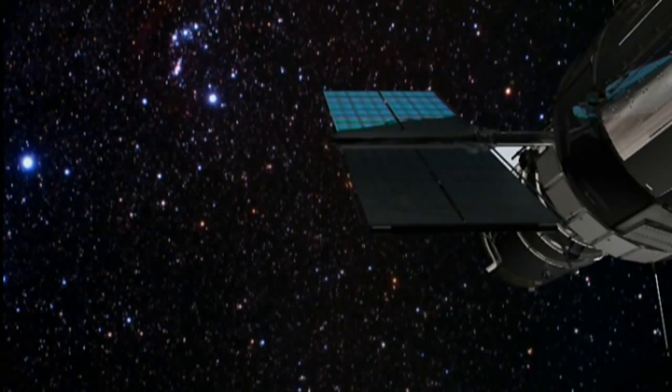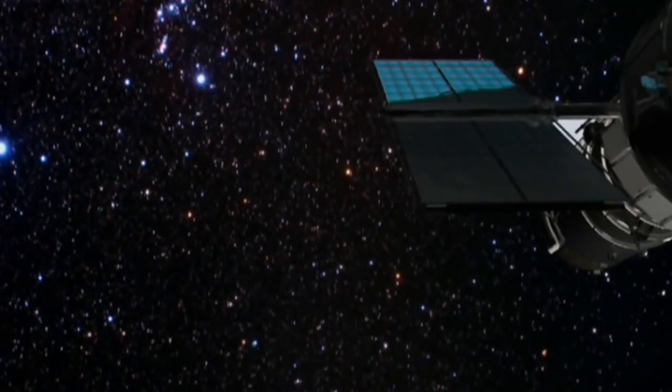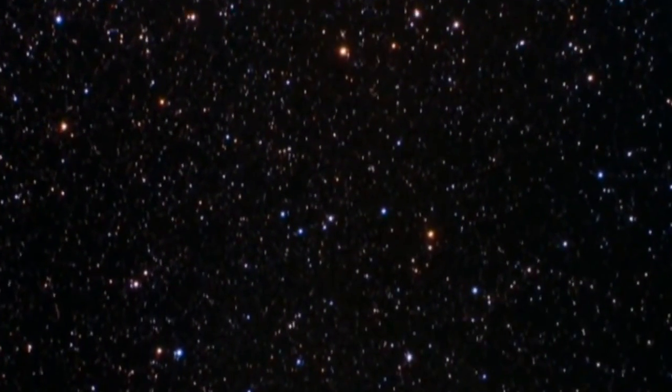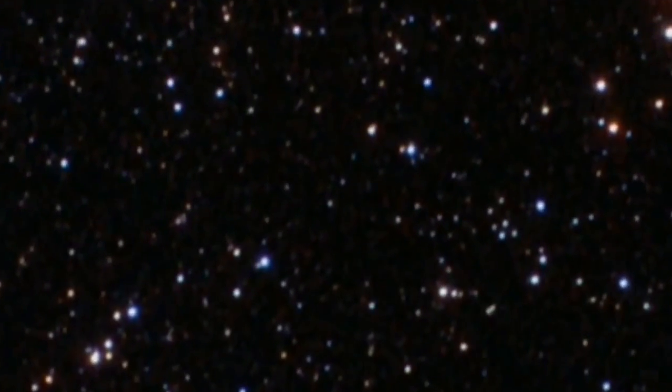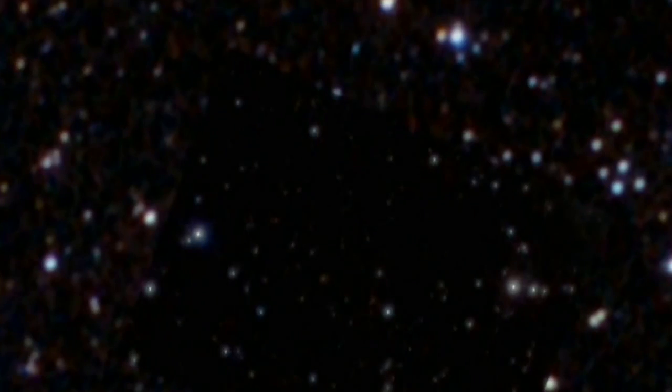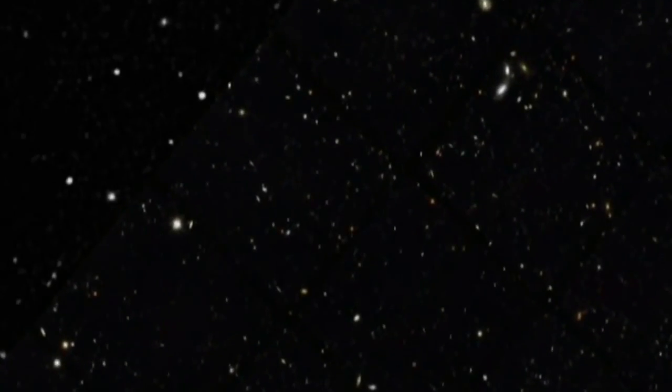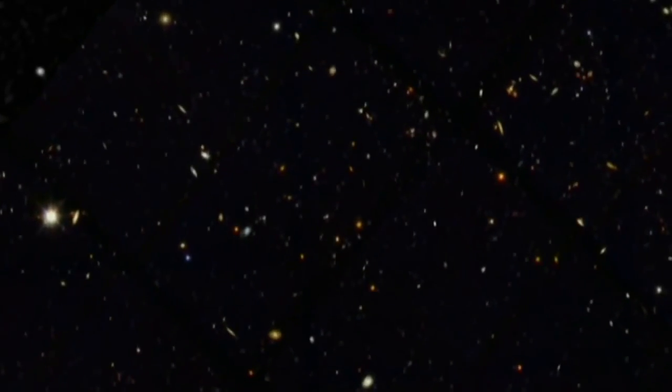Once they had begun to discover the most distant universe ever seen, Hubble astronomers tried to push their observations even farther back in time. In 2003 and 2004, Hubble performed its deepest exposure ever, the Hubble ultra-deep field. It is a 28-day long exposure, going much deeper than the earlier Hubble deep fields north and south.